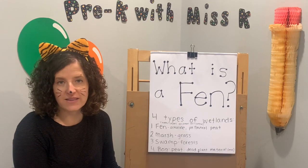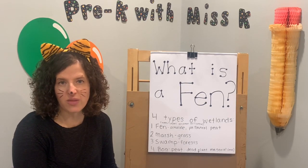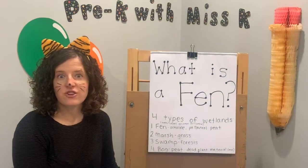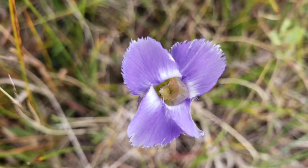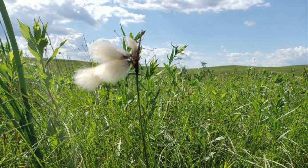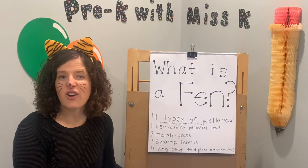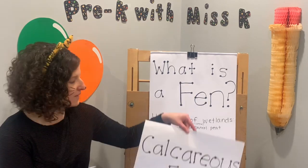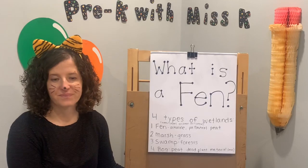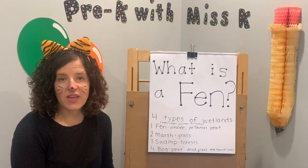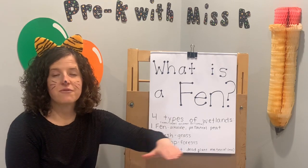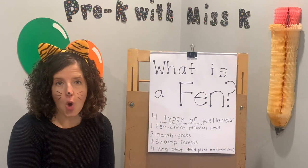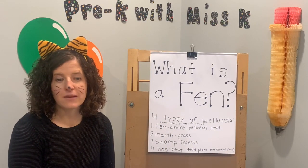A really cool fact about FEN is that there are special plants that grow there — plants like green orchids, fringe gentians that are purple flowers, and cotton grass that looks like cotton. There are even native butterflies that aren't seen anywhere else that you can find on these calcareous FENs. About every five years, they also do a controlled burn — they set fire to certain parts of the FEN to get rid of all the old plant material.